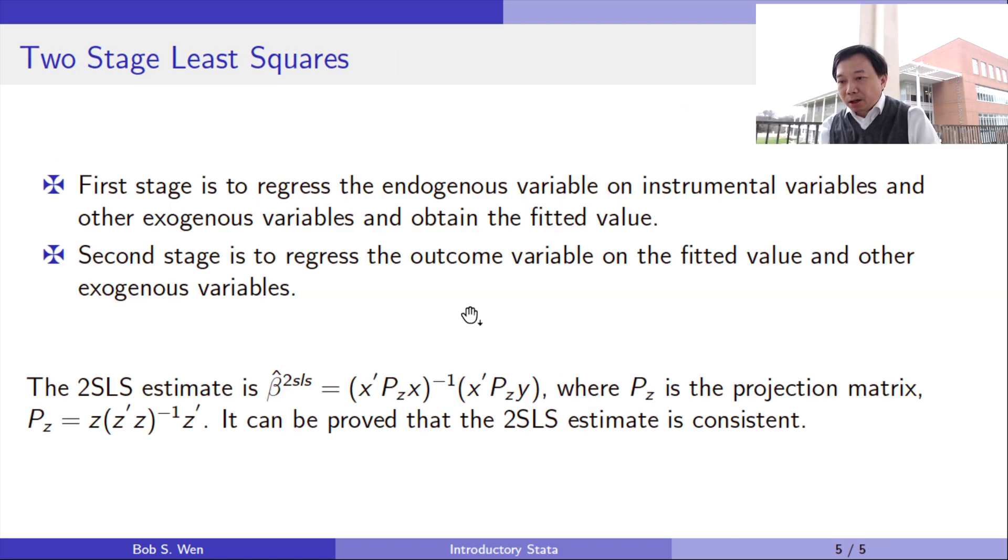The idea of the two-stage least squares estimation method is that in the first stage, the endogenous variable is projected onto the instrumental variable and you get the exogenous part of the variation of that endogenous variable. The fitted value is no longer correlated with the error term.